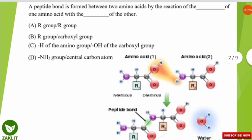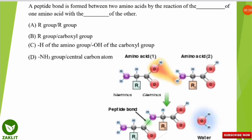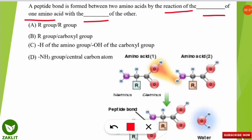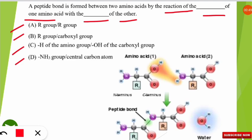The first question is: a peptide bond is formed between two amino acids. It is asking that it is formed by the reaction of the dash part of one amino acid with the dash part of the other amino acid. The correct option is option C. One of the amino group's H part — that is the hydrogen part — attaches to the hydroxyl part of the carboxyl group of another amino acid.